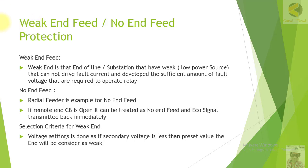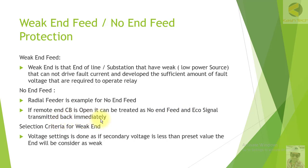Welcome friends. In this section we will study a new topic: weak-end feed and no-end feed protection. A weak-end is the end of the line or substation that has a weak or low power source that cannot drive fault current or develop sufficient forward voltage required to operate the relay. A no-end feed is a radial feeder example — if the remote end circuit breaker is open, it can be treated as no-end feed and an ECO signal is transmitted back immediately.